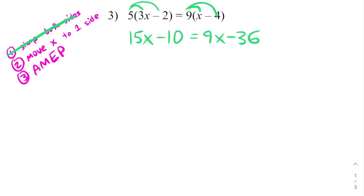That has simplified both sides. And now I need to move x to one side. So I'm going to take the smaller x, which is nine x compared to fifteen x, and I'm going to subtract nine x from both sides. This leaves me with a negative thirty six on the right. And then on the left, I'm going to get six x minus ten.